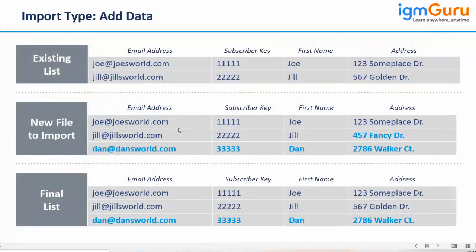Sure. Let's discuss the add type. If you are trying to import a CSV file into either a list or a data extension, and you are using import type add data, then whatever new records you are going to add will be added. But if you try to update the information of existing customers, that is not going to happen, because the import type selected is add data. Now, in this situation — the same logic works on both the list and the data extension.